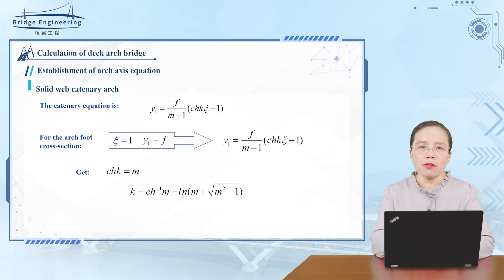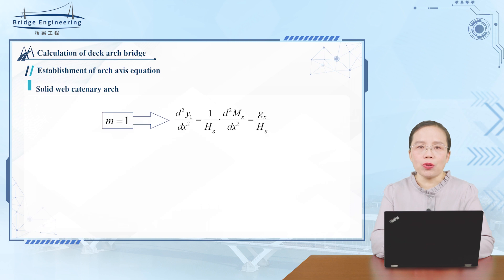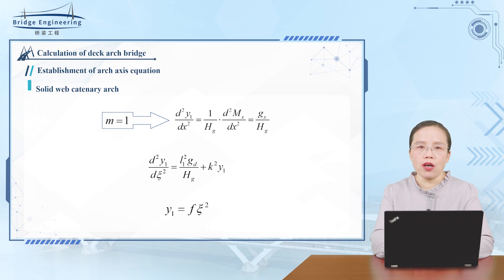When M equals 1, then Gx equals Gd, indicating that the deadweight of the structure is a uniformly distributed load. Substituting M equals 1 into the equation and solving the differential equation, it can be seen that the pressure line under uniform load is a quadratic parabola.